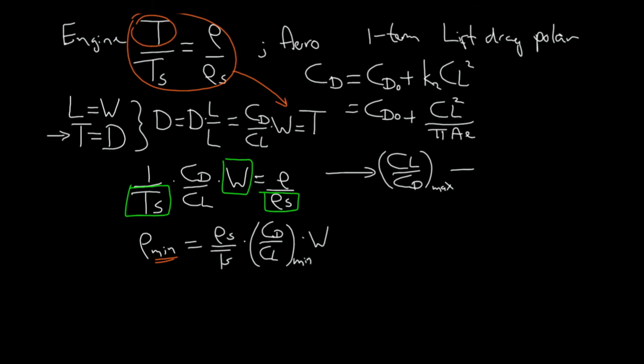Now, we already know from previous lectures that if we have this lift-drag polar then the solution for optimal lift over drag ratio is CL equals the square root of CD0 divided by this factor K. If you cannot remember that derivation just take some time to have a second look at our earlier videos.